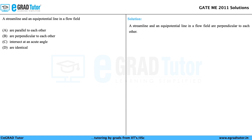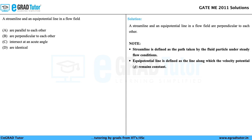A Streamline and an Equipotential Line in a Flow Field are perpendicular to each other. A Streamline is defined as the path taken by fluid particles under steady flow conditions, and an Equipotential Line is defined as the line along which the velocity potential phi remains constant. Therefore, the correct answer to this question is option B.